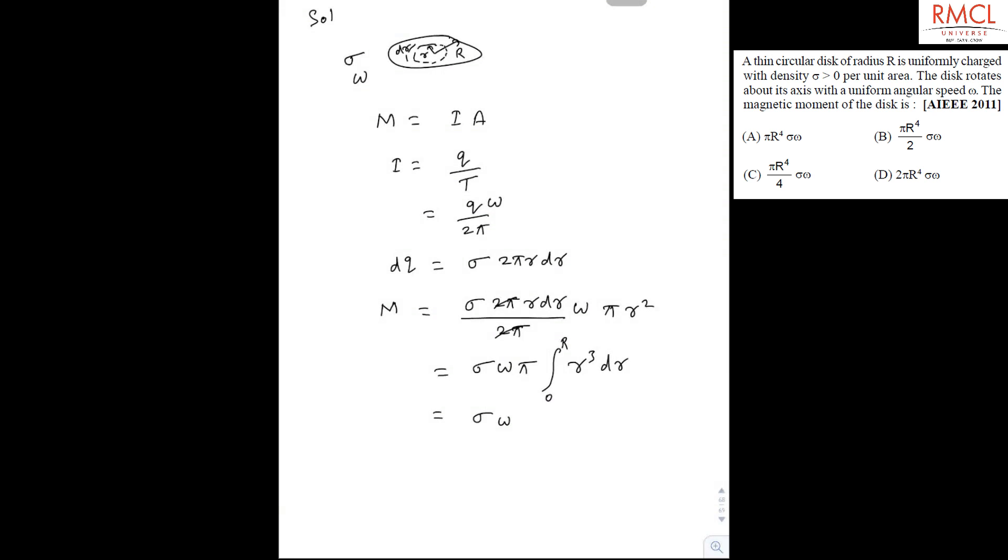So it is sigma omega π, and integrating gives r to the power 4 upon 4. We get the net magnetic moment as sigma omega π R⁴ upon 4. So the correct option is C.